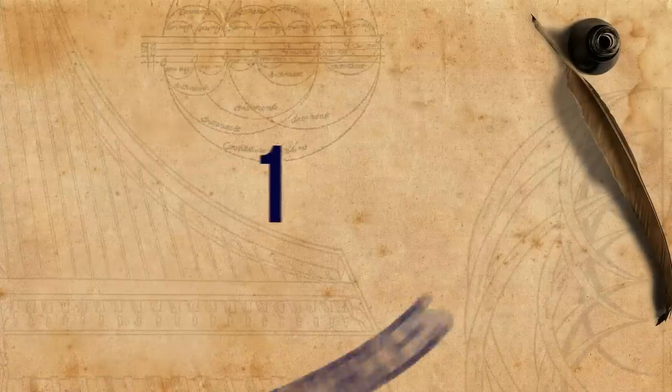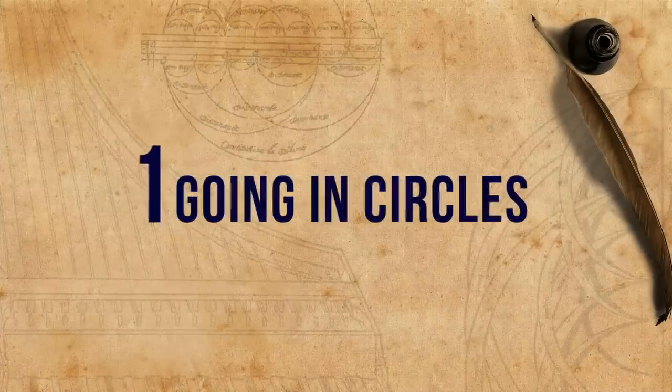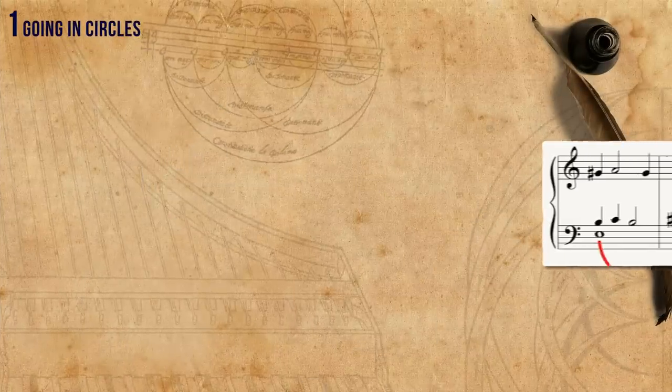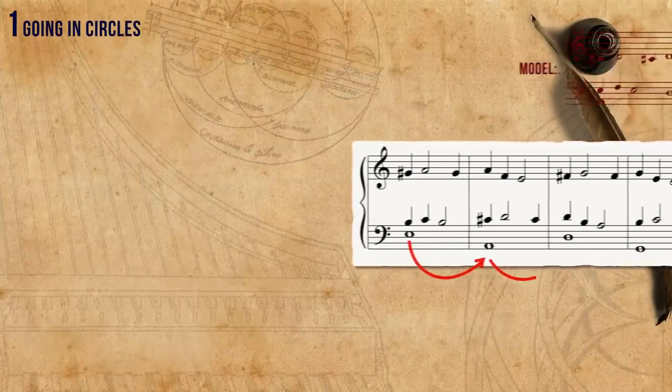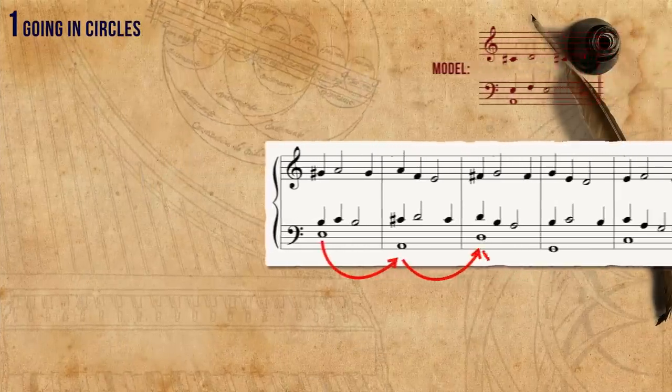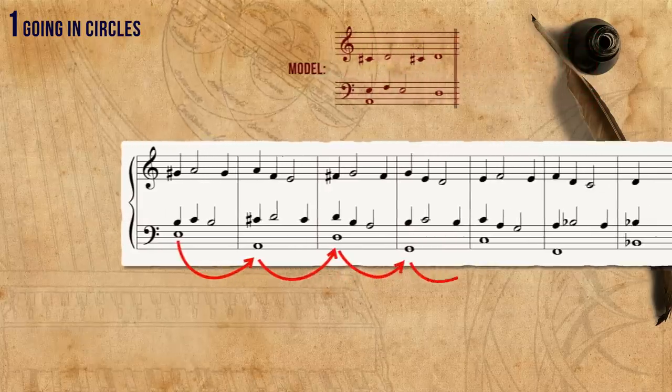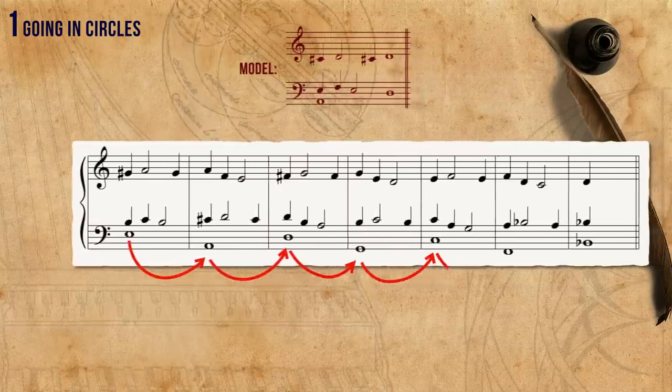Now that we know the basics of cadenza doppia, let's see five cool things we can do with it. The first four use the progression of the voices in order to create sequences. The first cool thing is going in circles: if every time that we land on the finalis of the cadence we start a new cadence, we create a sequence of descending 5ths.